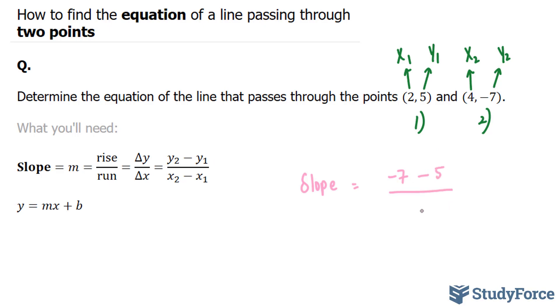Next, my x₂ was four, and my x₁ was two, so four minus two. The next step is to evaluate the top and the bottom. Negative seven minus five is equal to negative twelve, and you can confirm with your calculator. Four minus two is equal to two.